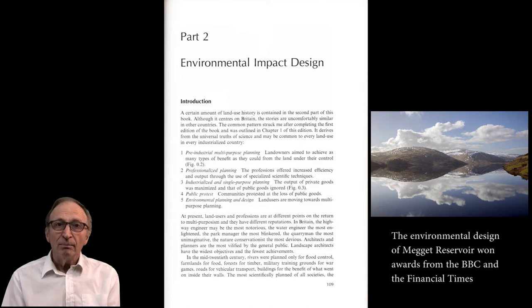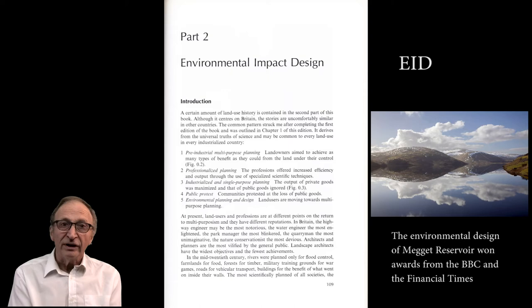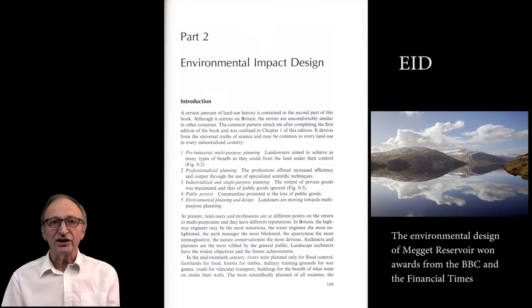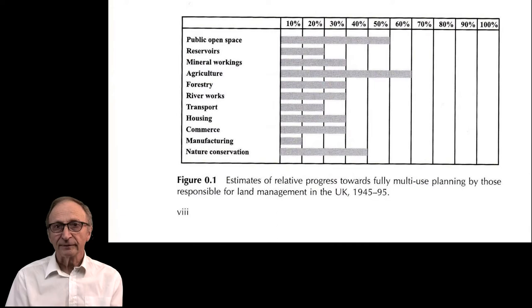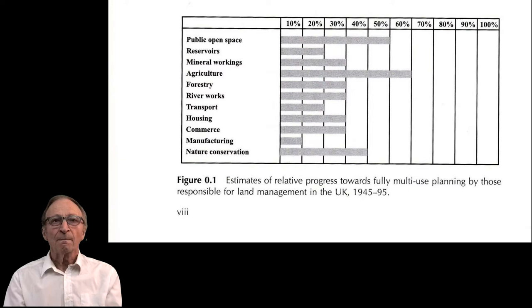My argument in Part 2 of the book was that more attention should be given to environmental impact project design — to EID. As well as mitigating the endless negative impacts of human use on the natural environment, projects should be planned with generosity and imagination, to yield positive impacts on the stock of public goods and to contribute to community objectives. The land uses discussed were seen to be at different points on the long journey from single-objective to multi-objective project planning.